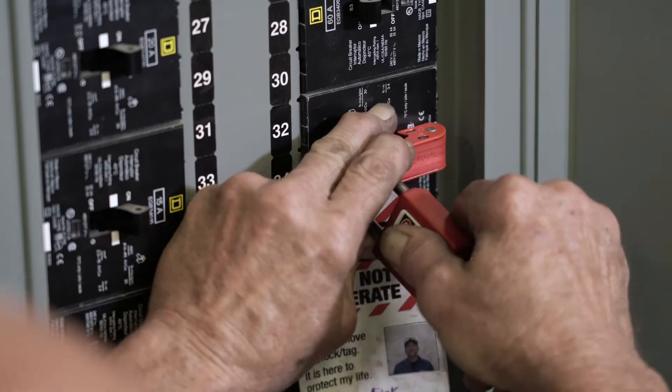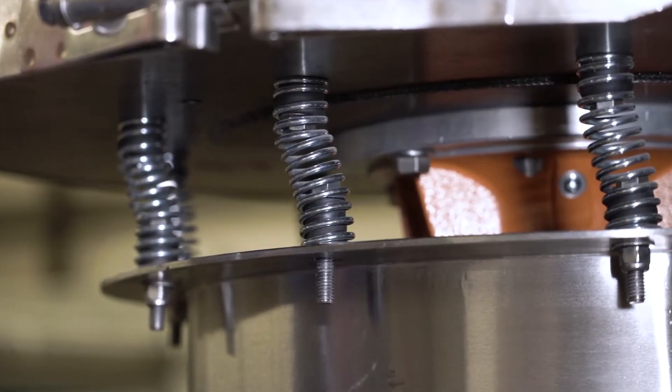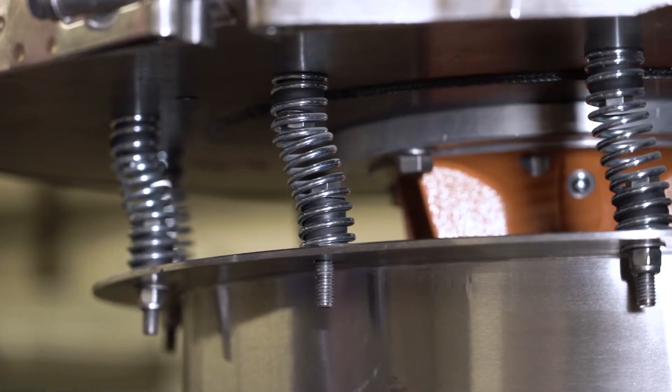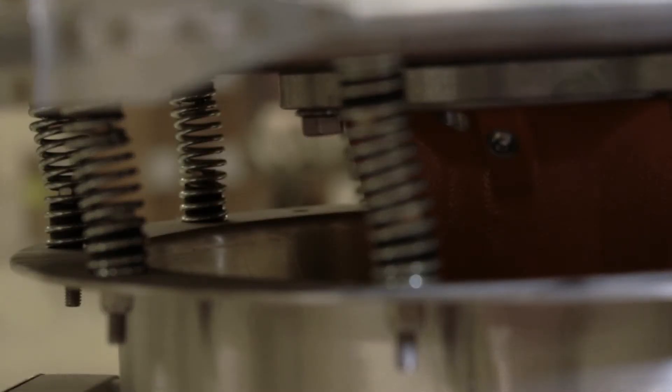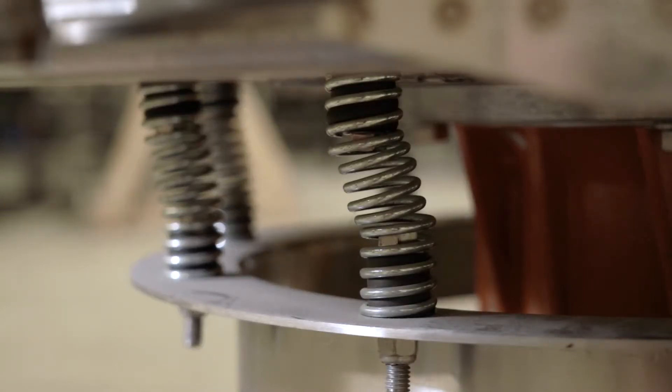After you have safely turned off the machine, you can now replace all the springs. Even though only one may have broken, they have all been exposed to the sheer force that caused the first one to fail. They may be compromised even if this cannot be seen. For that reason, we recommend replacing them all.